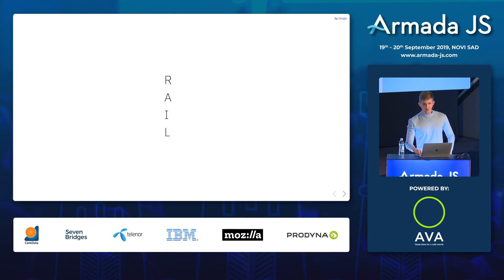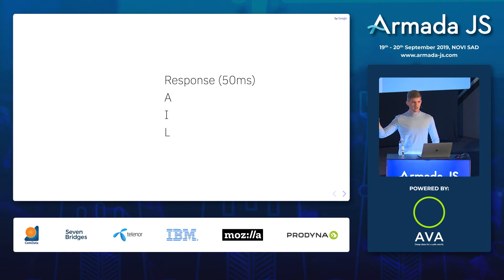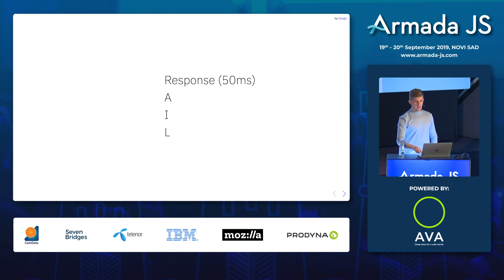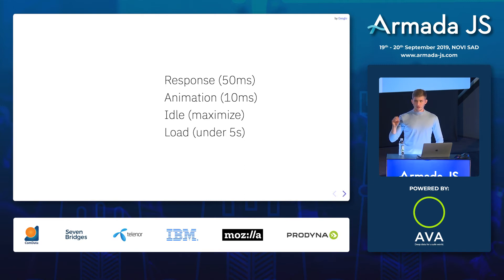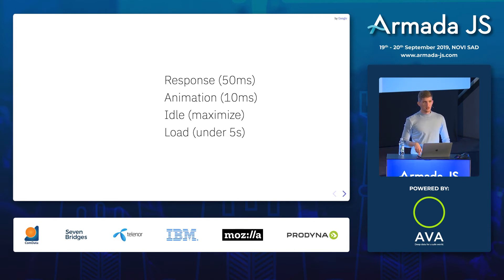This technique is based on one interesting fact: when you interact with software, you have 100 milliseconds to give a response to users — and within that window, the user thinks it's instantaneous. Have you heard of RAIL? It's a technique from Google that describes exactly this. You actually have 50 milliseconds to respond, because the browser needs extra steps to process user input. You want to maximize idle time and load content under five seconds. In this talk, we're interested in two things: response within 50 milliseconds and animation within 10 milliseconds.